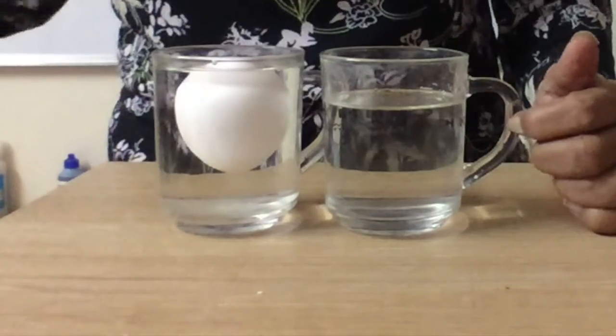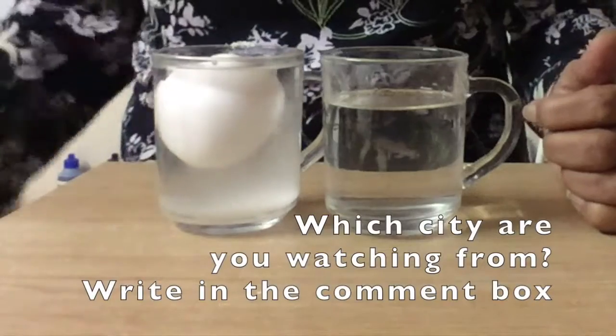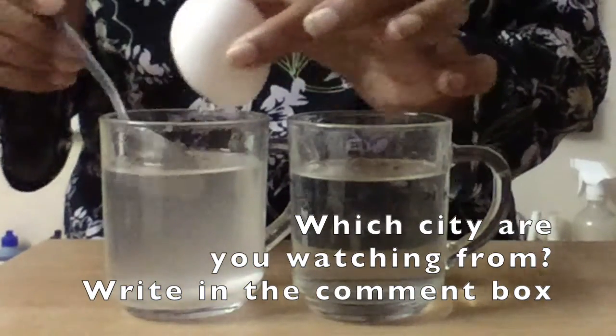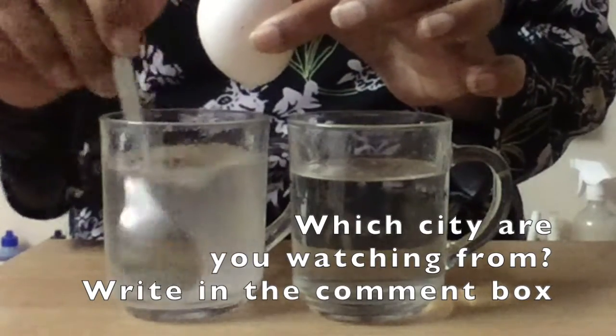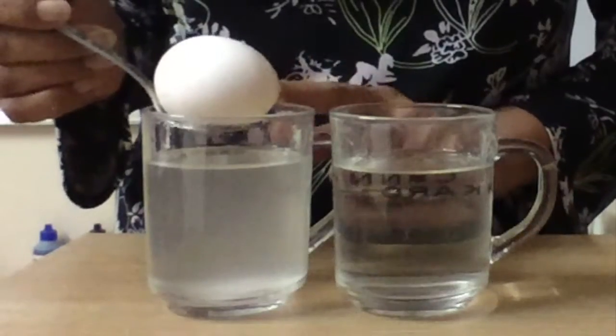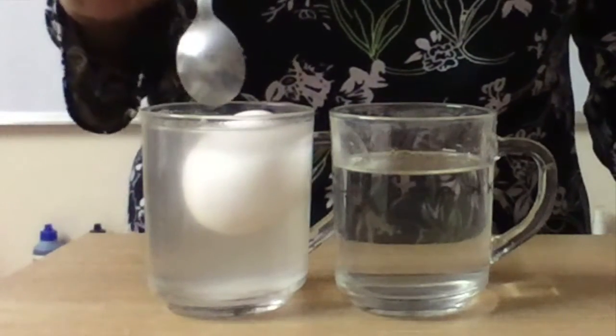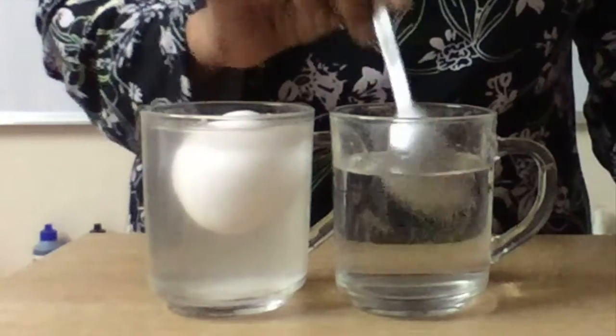Now I am going to add some more salt. Let me just take out the egg and let me just stir this. Because of the salt its density has increased and because of that when I place the egg you will see that the egg did not sink as it sank over here.